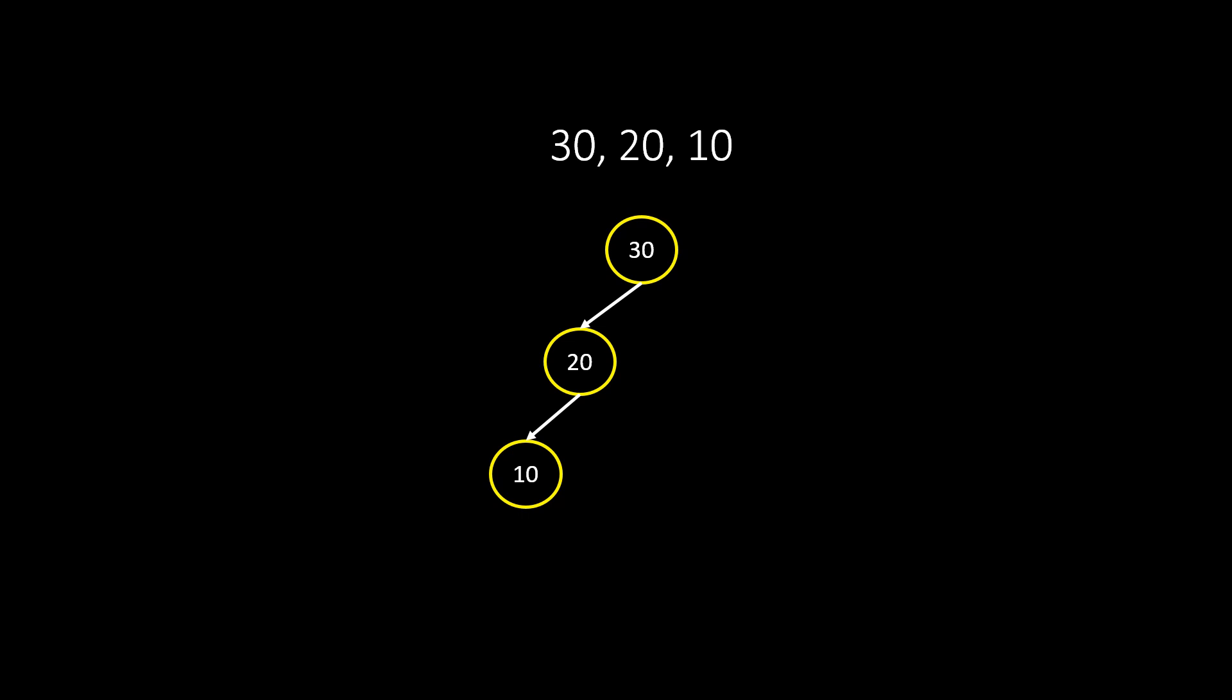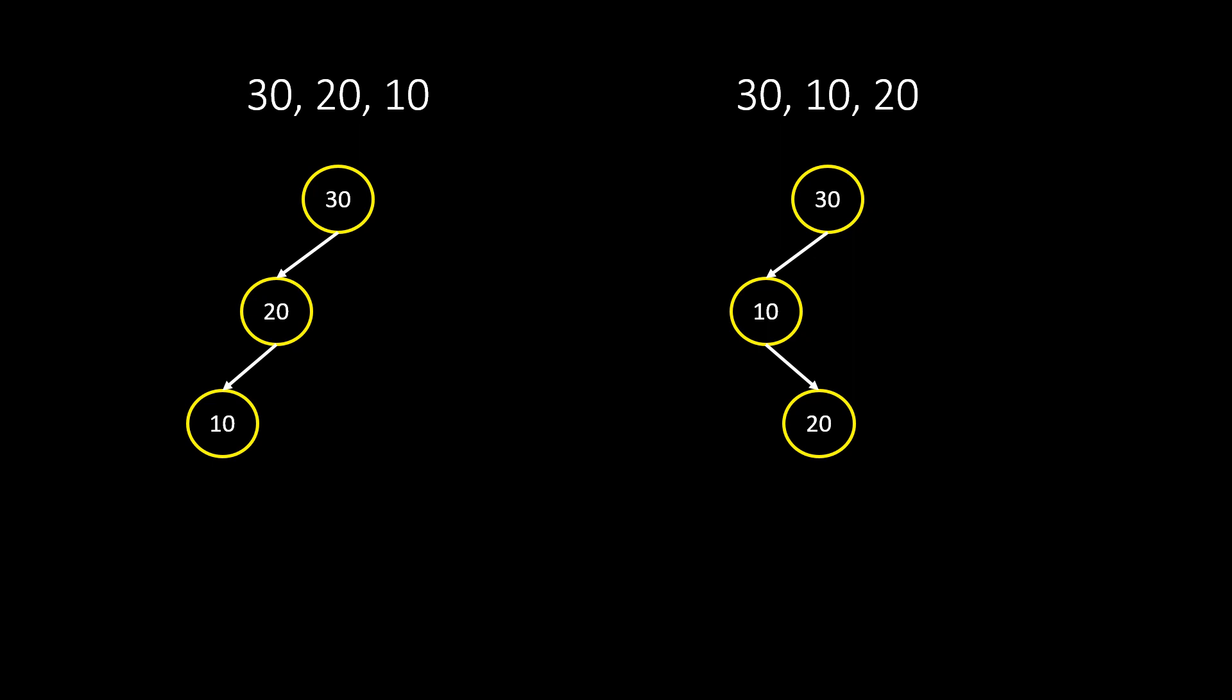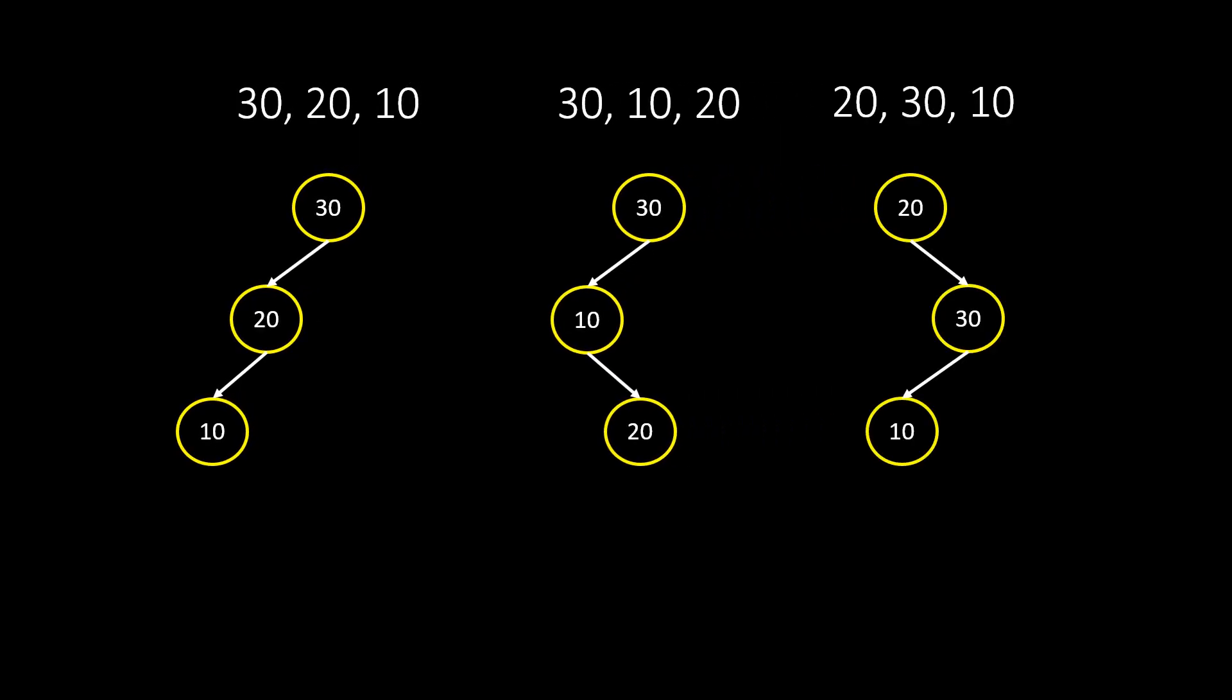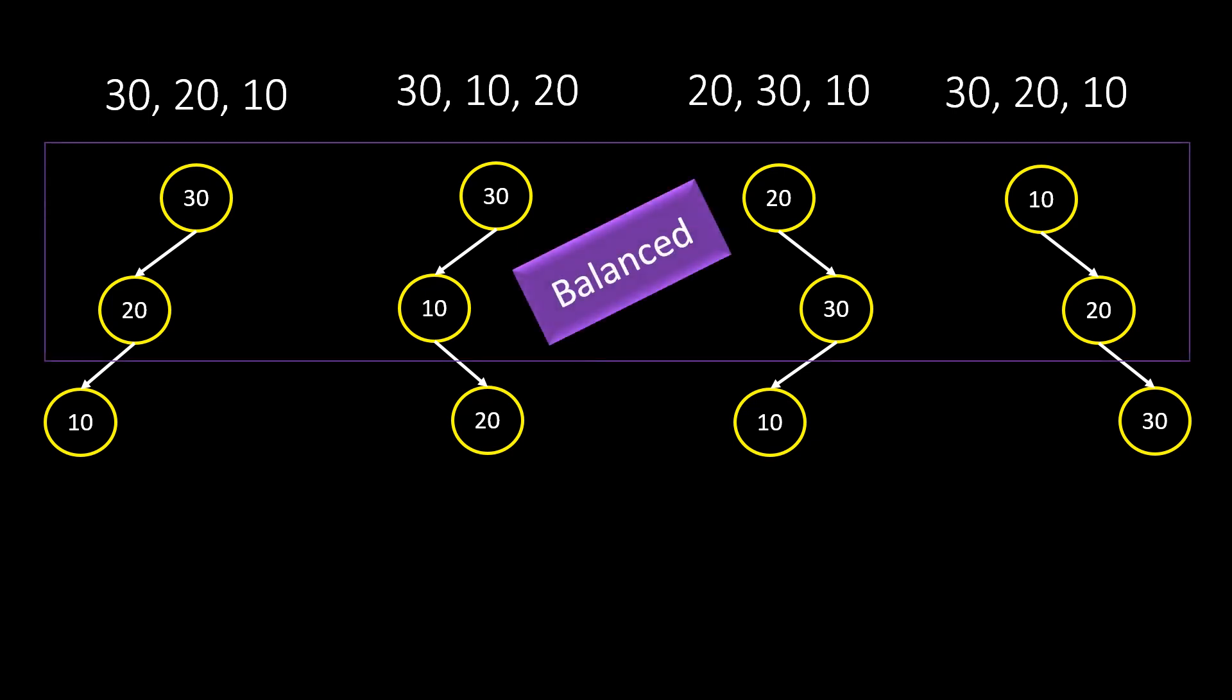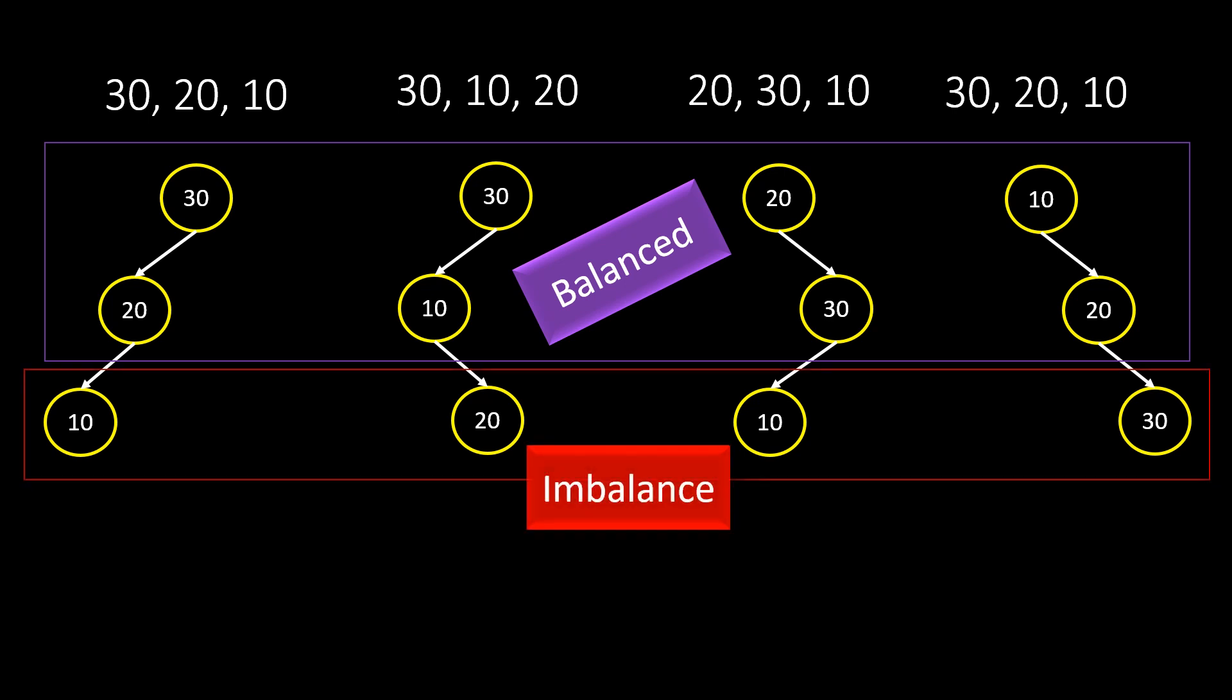Taking these 3 nodes, here is the BST that will be created. If we change the order, this gets created. Or this one. Or this one. All these are not balanced binary tree that we wanted. Here, we can see that if we had just these 2 nodes, the tree was balanced. But the addition of the 3rd node creates an imbalance.